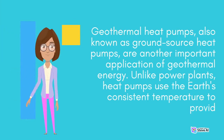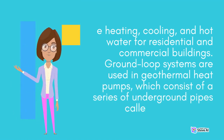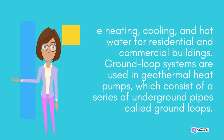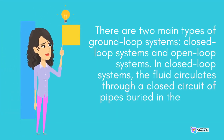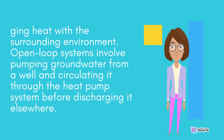Geothermal heat pumps, also known as ground-source heat pumps, are another important application of geothermal energy. Unlike power plants, heat pumps use the Earth's consistent temperature to provide heating, cooling, and hot water for residential and commercial buildings. Ground-loop systems consist of underground pipes containing a fluid that transfers heat between the ground and the building. Closed-loop systems circulate fluid through a closed circuit buried in the ground, while open-loop systems pump groundwater from a well and circulate it through the heat pump system before discharging it elsewhere.